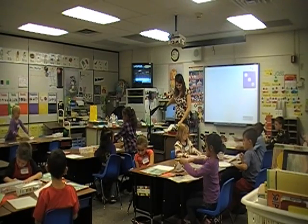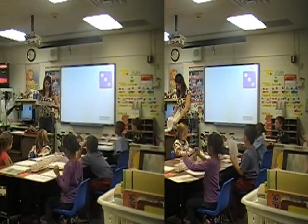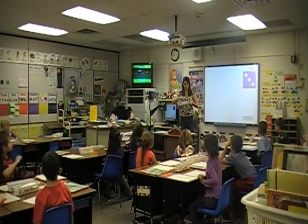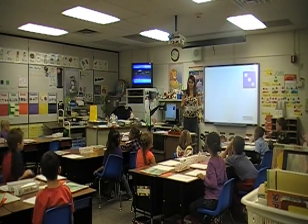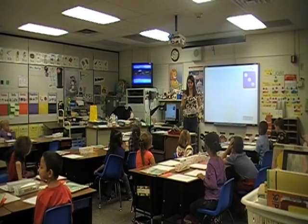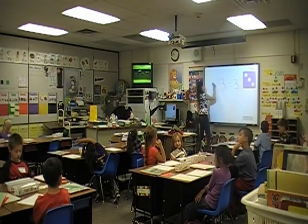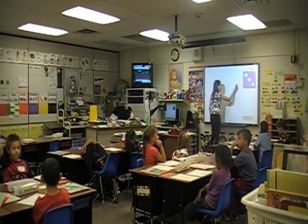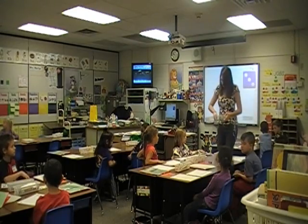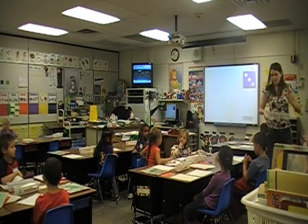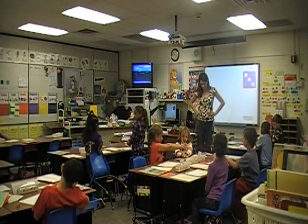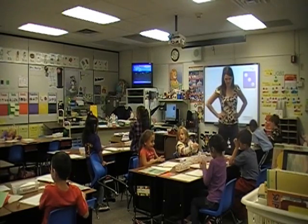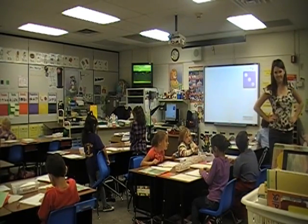And we're going to play the roll and record game. I'm going to give you two dice. You and your partner are going to roll them both. Whatever the bigger number is, that's what you subtract from. Pass out your dice, and you and your partner can get started. Make sure you take turns rolling the dice.